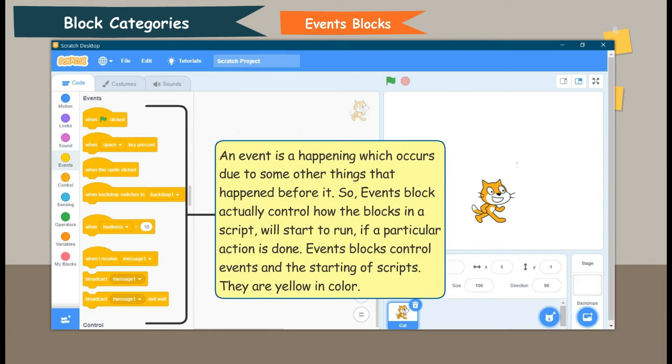Events block. An event is a happening which occurs due to some other things that happened before it. So events block actually control how the blocks in a script will start to run if a particular action is done. Events blocks controls events and the starting of scripts. They are yellow in color.